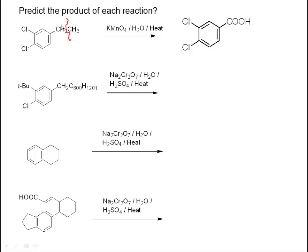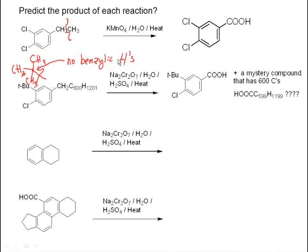The next one has two different alkyl groups; however, one is a tertiary butyl group. A t-butyl group has no benzylic hydrogens. As a result, when you do this oxidation, you don't do anything to the t-butyl group or the chlorine, but the other side chain — quite a massive side chain — undergoes the oxidation smoothly to produce the corresponding product.